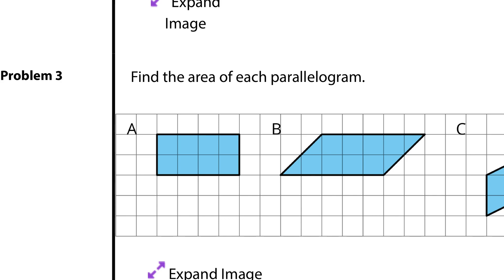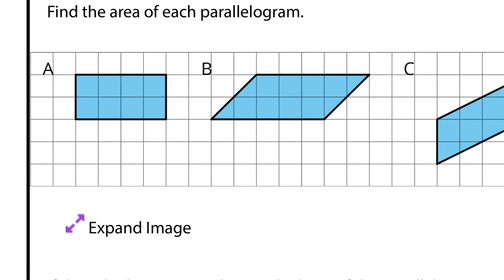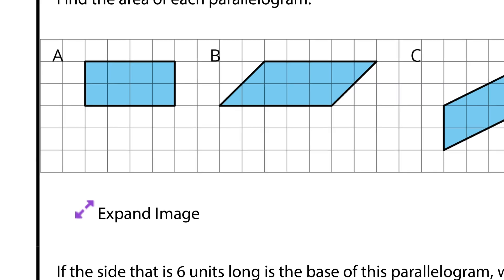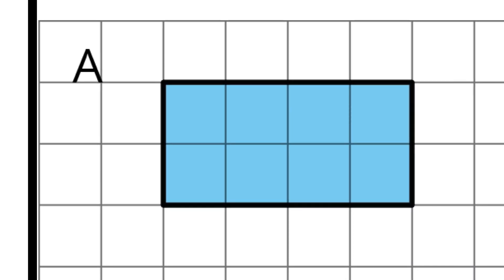Question three. Find the area for each parallelogram. Well, if we lock in on A, this is 2 by 4, and area will just equal, well, 2 times 4, which is 8 square units.